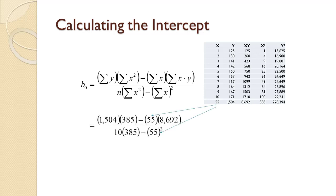The sum of the X's, 55, is used in two places. The sum of the X squareds, 385, is used in two places. The sum of the Y's, 1,504, is used in one place. The sum of the X times Y's, 8,692, is also used in one place.